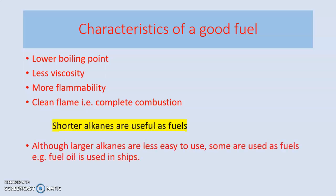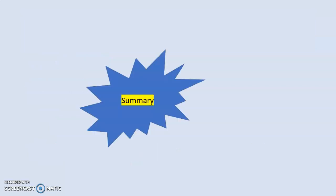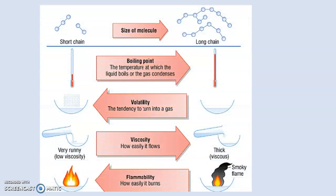Although larger alkanes are less easy to use, some are still used. The particularly useful ones are the shorter alkanes. The fractions you get at the top end of the fractionating column are the short chain ones, and they are the more desirable ones. Longer hydrocarbon chains obtained at the bottom of the fractionating column are less desirable as fuels, and therefore they need to be broken down into short chain alkanes before they can be used as fuels.